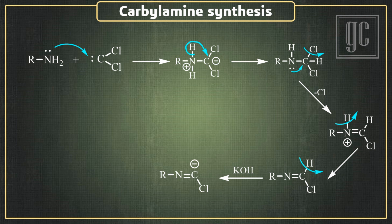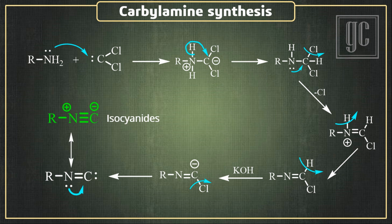One chlorine atom leaves the molecule and takes the bonding electrons. Here again carbene is formed, and the valency of the carbene is stabilized by the lone pair on nitrogen. As a result, a positive charge is generated on nitrogen and a negative charge on carbon, and an isocyanide is formed.